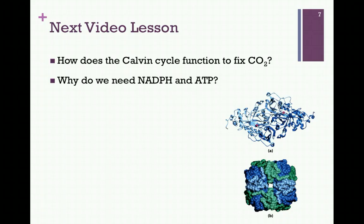In our next video lesson, we'll see how the Calvin cycle functions to fix carbon dioxide into chemical carbon compounds. Then we can understand why all of the NADPH and ATP generated through the processes of cyclic and non-cyclic flow examined in this lesson, in the processes of photosynthesis, are needed.